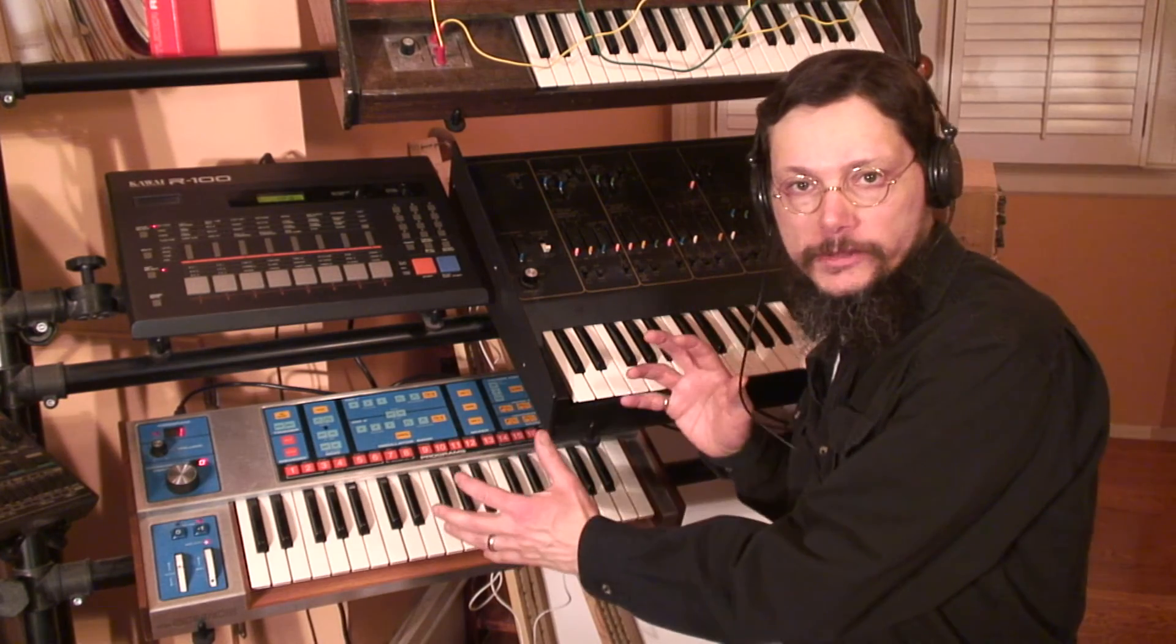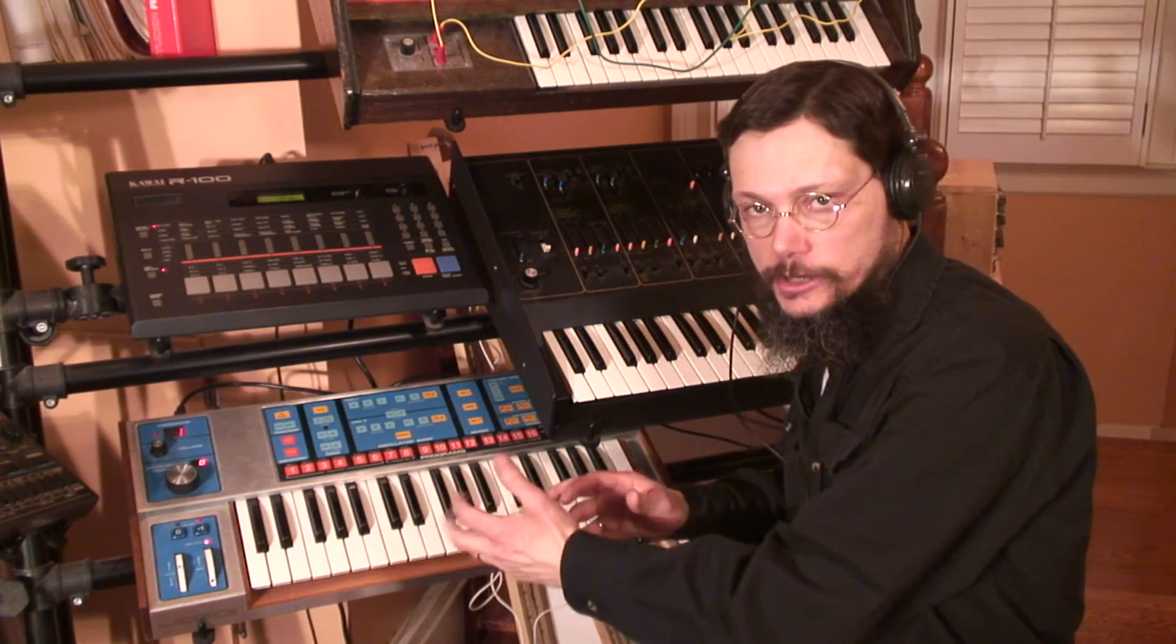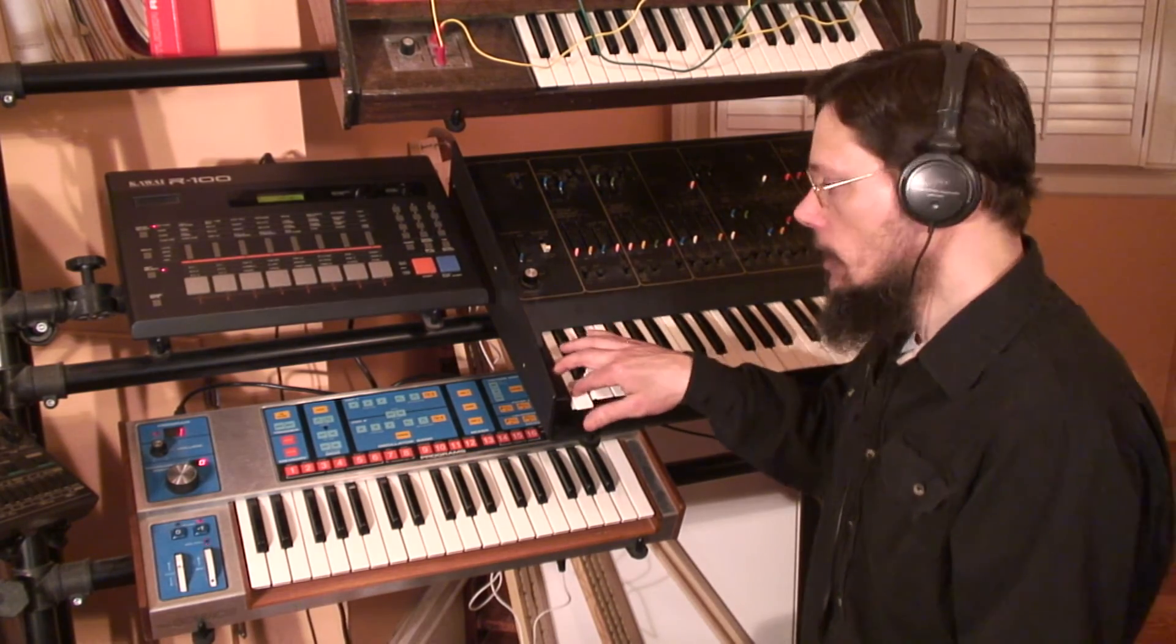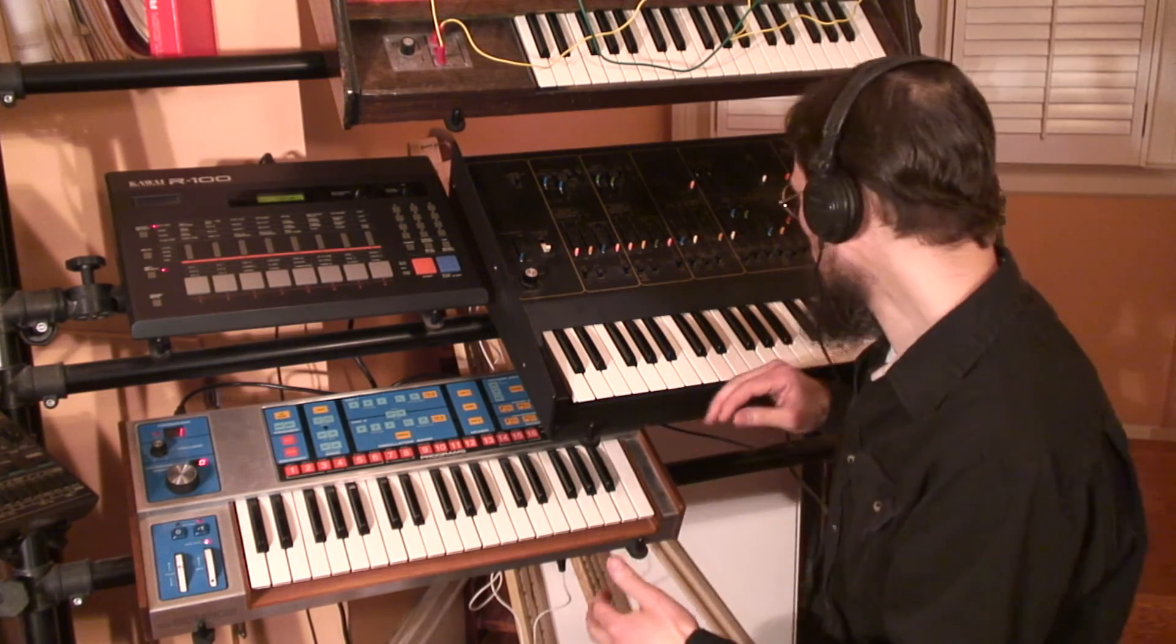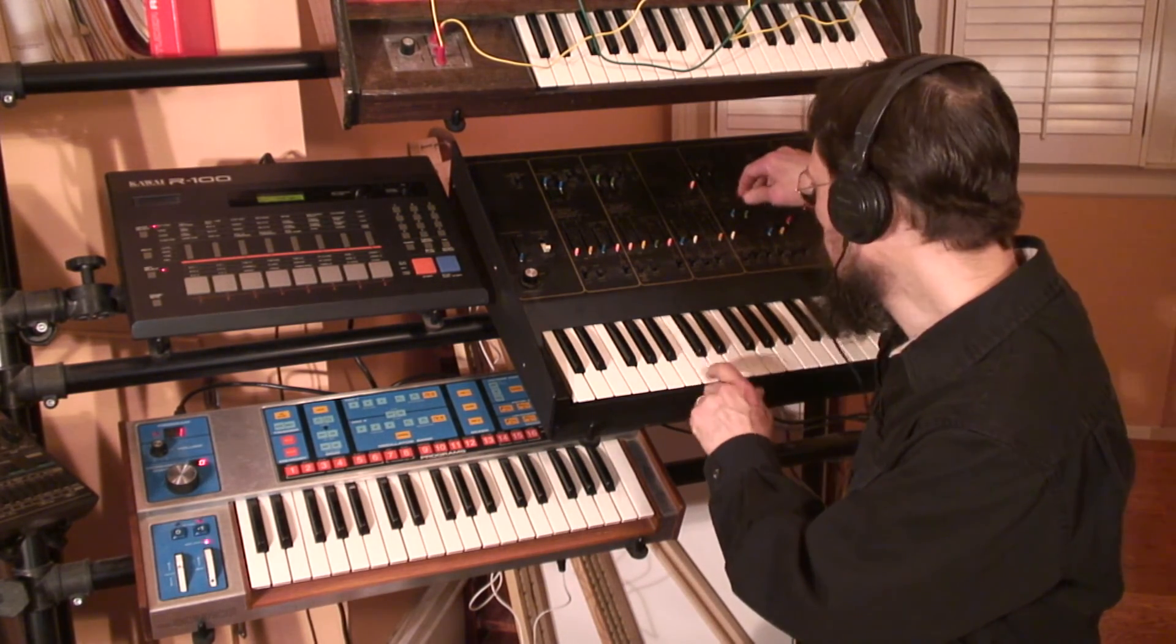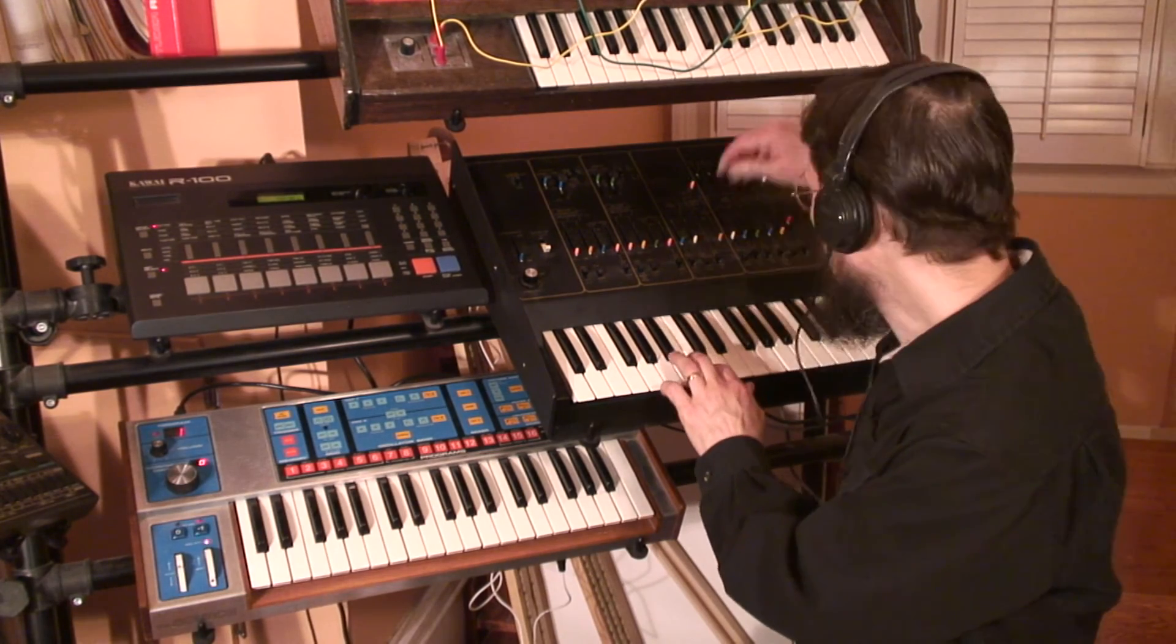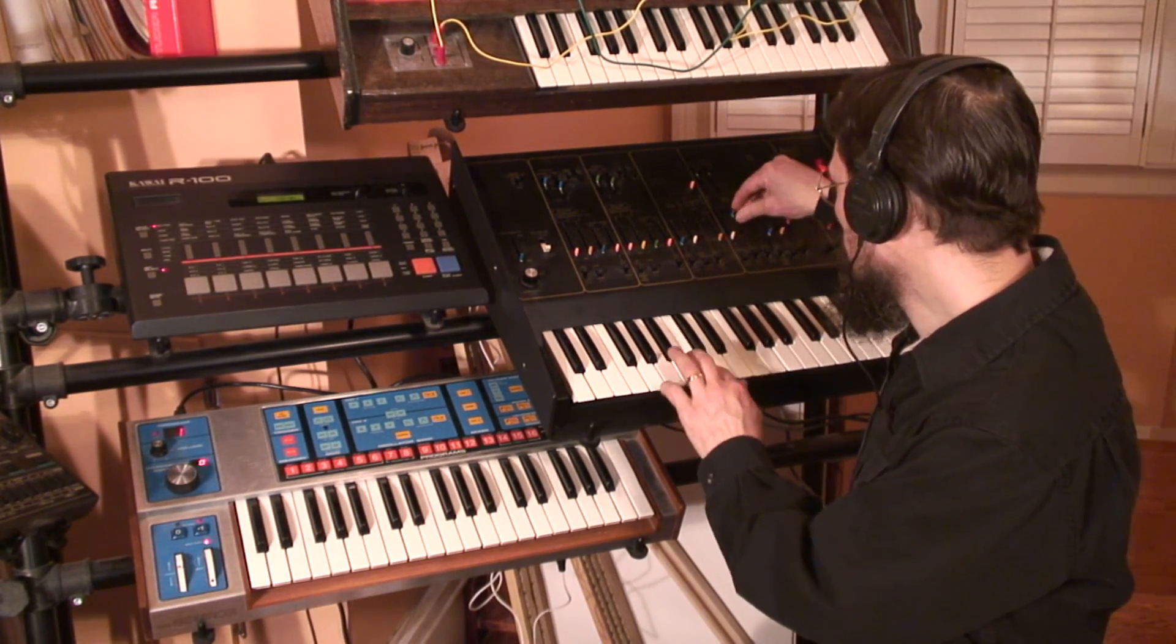So now both synthesizers are connected together again but this time we're using the V-trig to S-trig converter cable. And as you can hear, they trigger together and they layer really well. Now just to show how the triggering works, I'll turn the oscillators down on the ARP. So that's both. And the oscillators on the ARP are down so I'm triggering the Moog from the ARP, and then I'll turn the ARP oscillators back up. There we go.